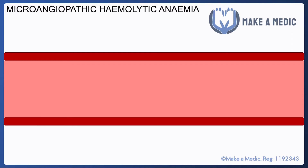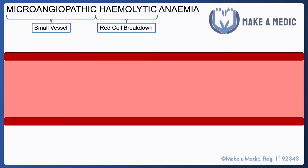So firstly, let's talk about microangiopathic haemolytic anaemia, or MAHA. The trick is in the name: microangiopathic means that it affects small vessels, haemolytic means that red cells are being broken down, and it causes anaemia as a consequence. Essentially, it's telling you that red cells are being broken within small vessels, which normally tends to be due to the formation of some sort of platelet plug.